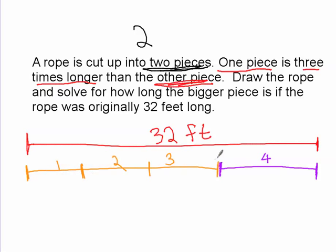The orange represents one piece, and the purple represents the other piece. And the reason that the orange piece is longer is because it says up here that one piece is three times longer than the other piece.